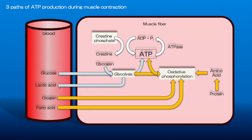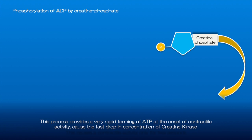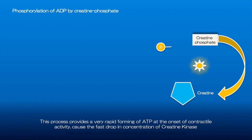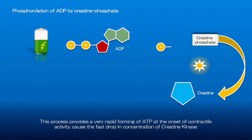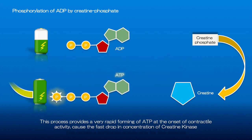Phosphorylation of ADP by creatine phosphate provides a very rapid forming of ATP at the onset of contractile activity. When the chemical bond between the creatine and the phosphate is broken, the released energy along with the phosphate group can be transferred to ADP to form ATP. This is a reversible reaction, all catalyzed by creatine kinase.